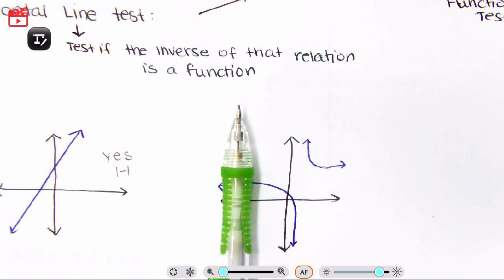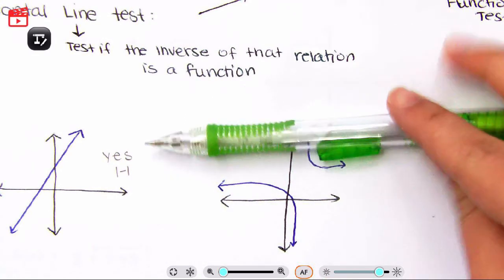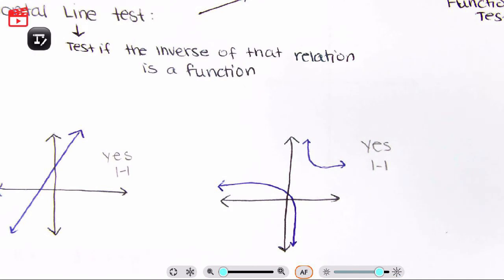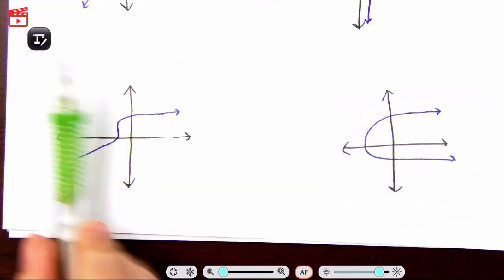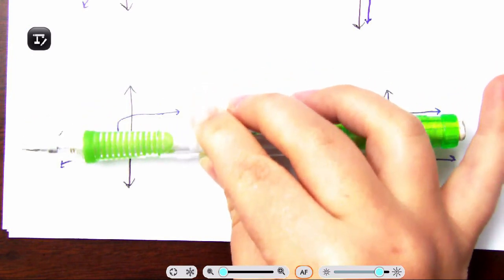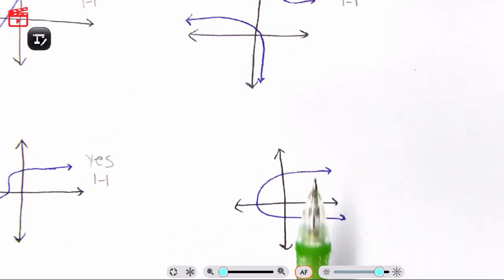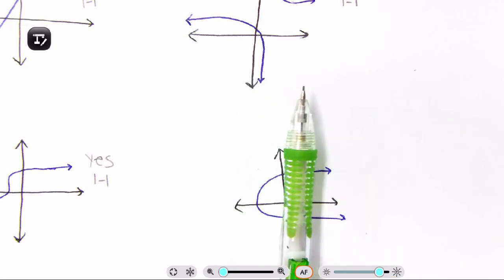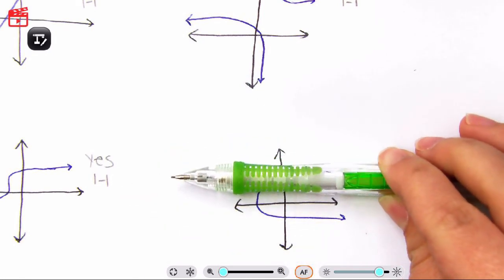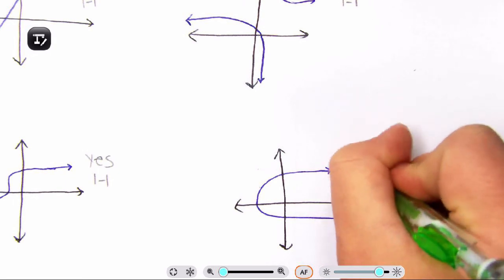Let's try another example. At any point does the line touch more than once? It does not — so it passes the vertical line test. Now let's try the horizontal line test. At any point does it touch more than once? No, it does not. So yes, this is in fact a one-to-one function. Let's move on. Do I have any two Y's for one X or any two X's for one Y? I do not. So this passes the horizontal line test as well.